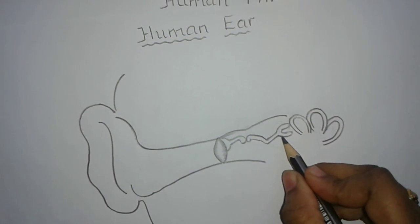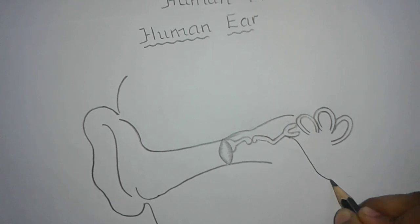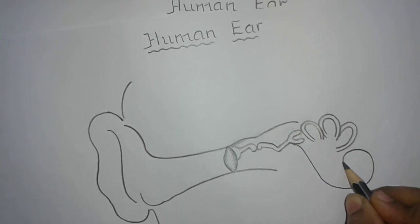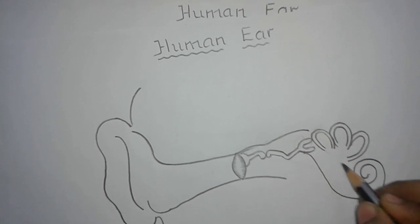The lower part of the inner ear is called the sacculus and it has an appendage called the cochlea. Draw the cochlea like this. So this is the cochlea.